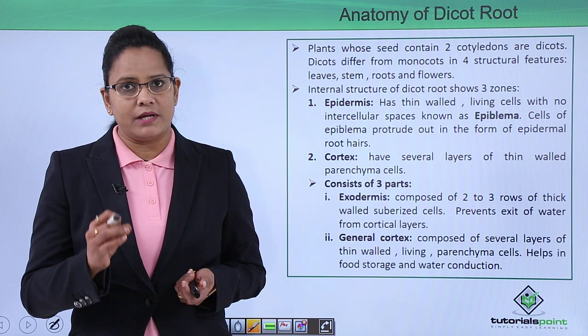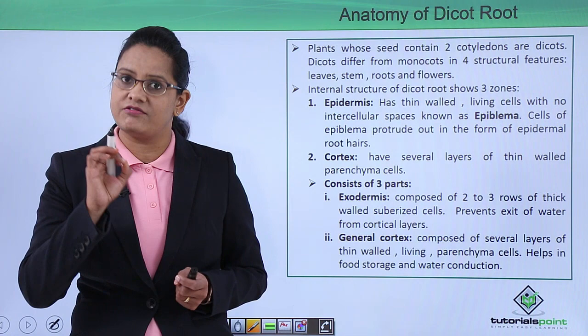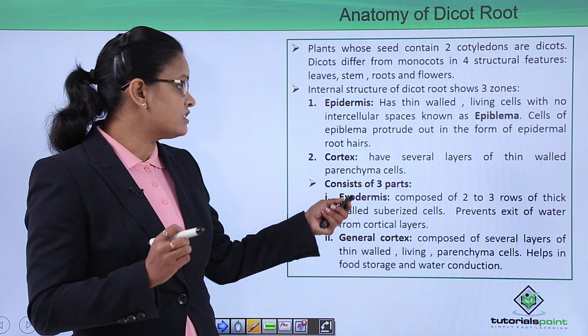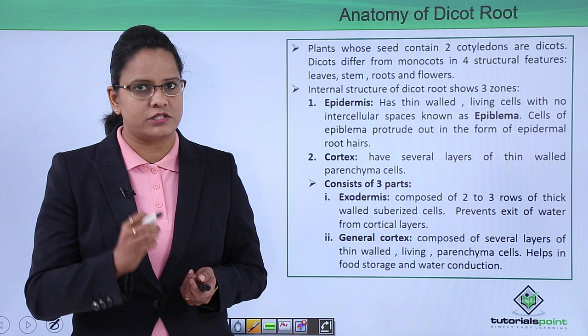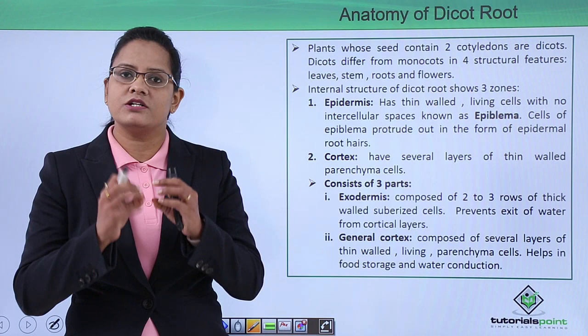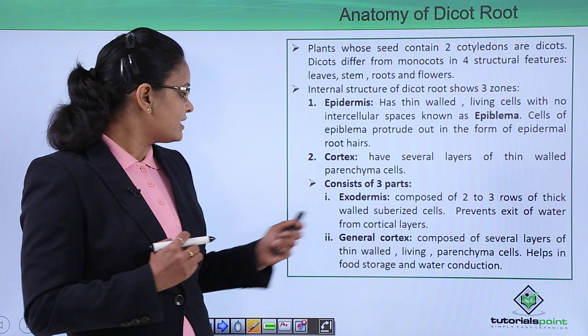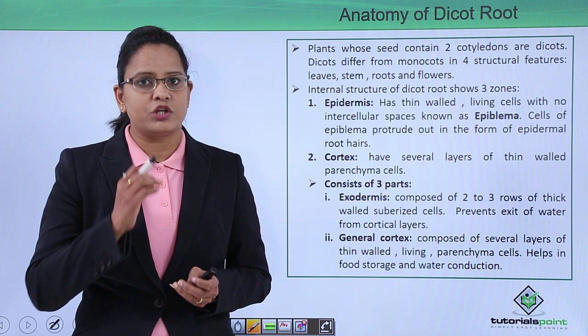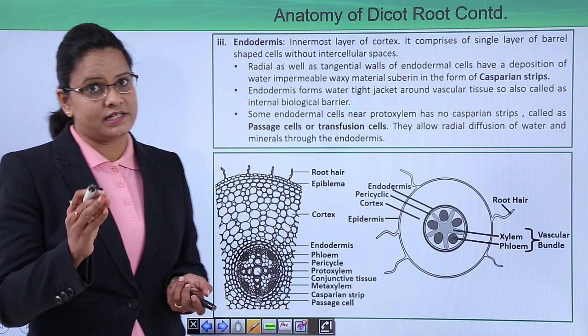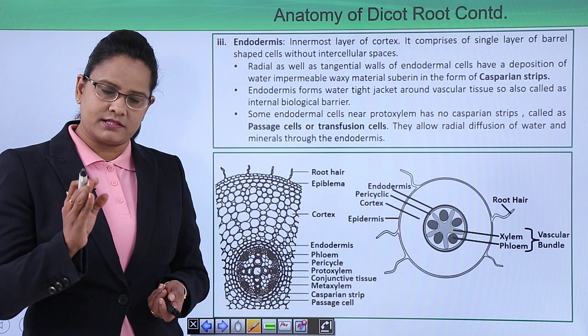The next layer is the cortex, made up of several layers of parenchymatous cells. It is further divided into three zones. The first is the exodermis, where cells are suberized — two to three layers thick with a layer of suberin deposited on them — which prevents the exit of water. The next is the general cortex layer, made up of thin-walled living parenchymatous cells, functioning in storage of food and conduction of water.